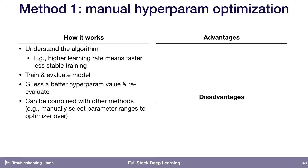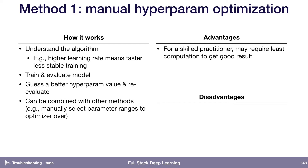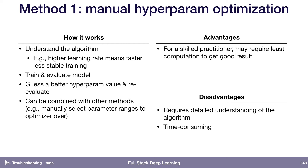This can be combined with other methods and has a couple of advantages. If you're a really skilled practitioner who truly understands the algorithm, this can be the most computation-efficient way of selecting really good hyperparameters — which is kind of why the concept of 'grad-student descent' exists in academia. If you're in a compute-limited environment, maybe the cheapest way to get the best model is to have someone manually tune your hyperparameters. The main disadvantages are that you actually have to really understand the algorithm, which can be hard, and it's super time-consuming.